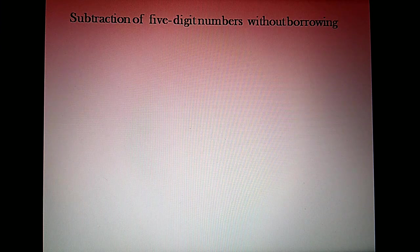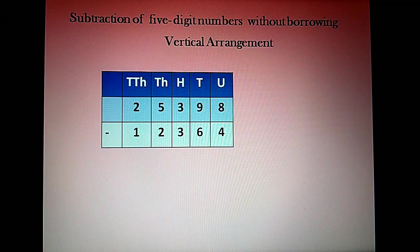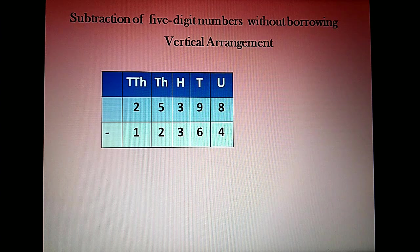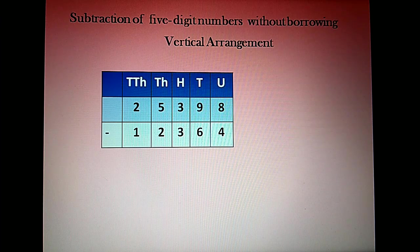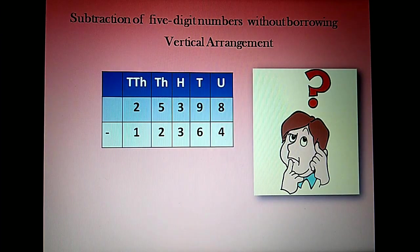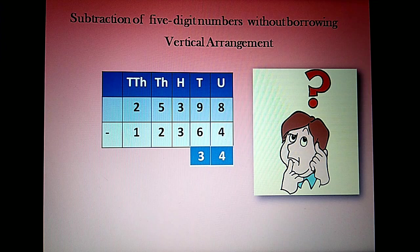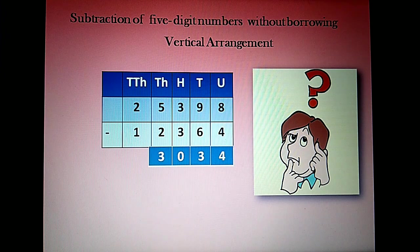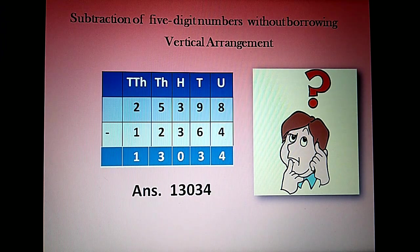Now we shall learn subtraction of 5-digit numbers without borrowing in vertical arrangement. Here one more column is added — the 10,000s column. The number given is 25,398 minus 12,364. We start from the units place: 8 minus 4 is 4. Tens place: 9 minus 6 is 3. Hundreds place: 3 minus 3 is 0. Thousands place: 5 minus 2 is 3. Ten-thousands place: 2 minus 1 is 1. So our answer is 13,034.